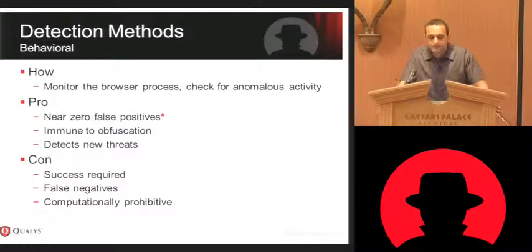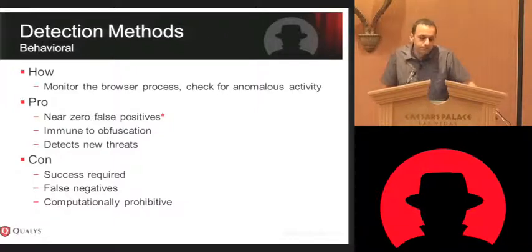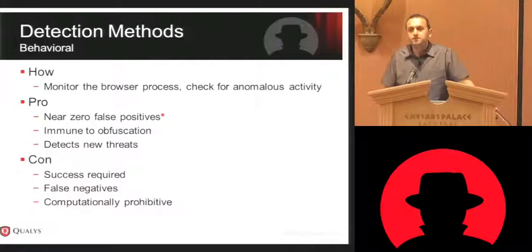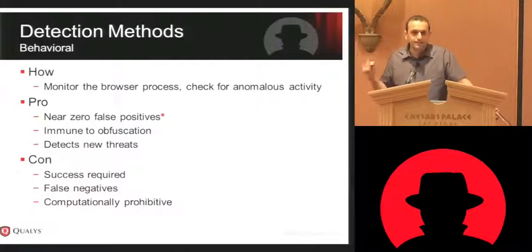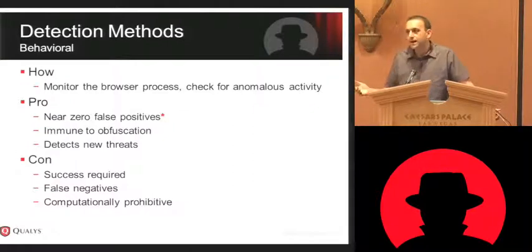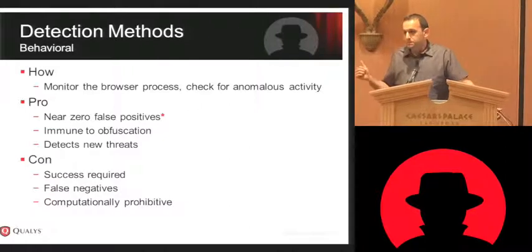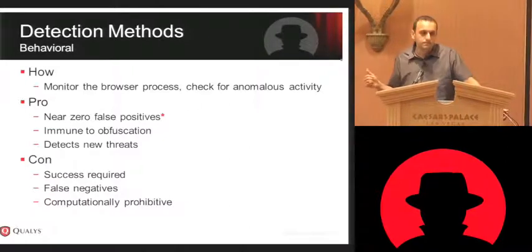This technique has a lot going for it. There's a near-zero false positive rate — and I've got a big asterisk there because any time you state an absolute, the universe is going to conspire to prove you wrong. It's nearly perfect assuming, A, your behavioral profile is bang on and you haven't missed anything, and B, you don't have any bugs in your code.